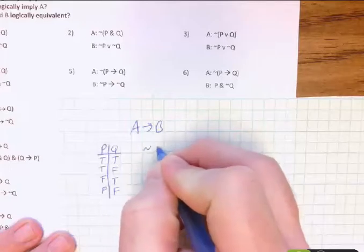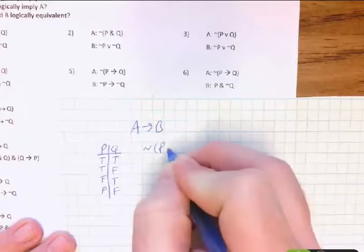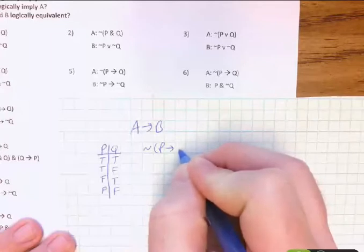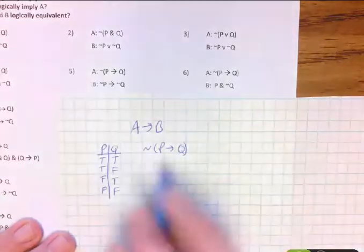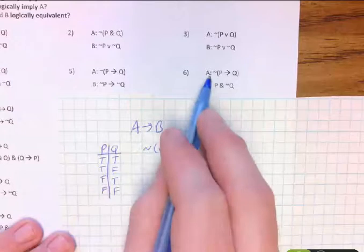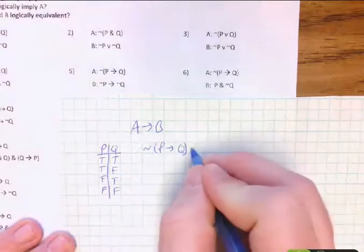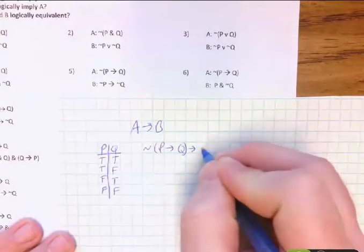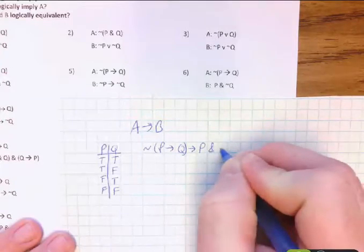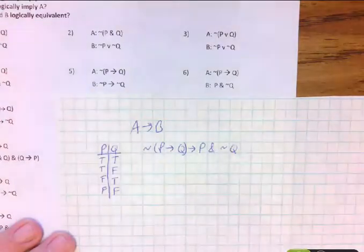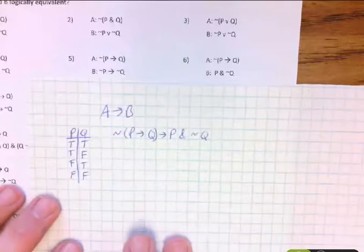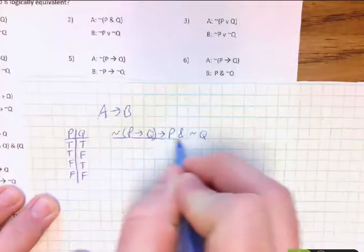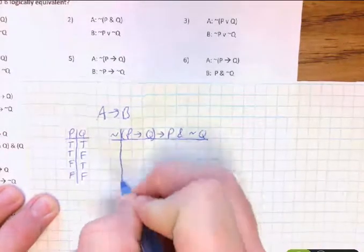And A is not the quantity P implies Q, or if P then Q. So I'll set up a different column for each one. So there's the not, the negation. I got my P here. I got the if-then statement, or if-then connective, and then my Q. This is A right here, that's A.